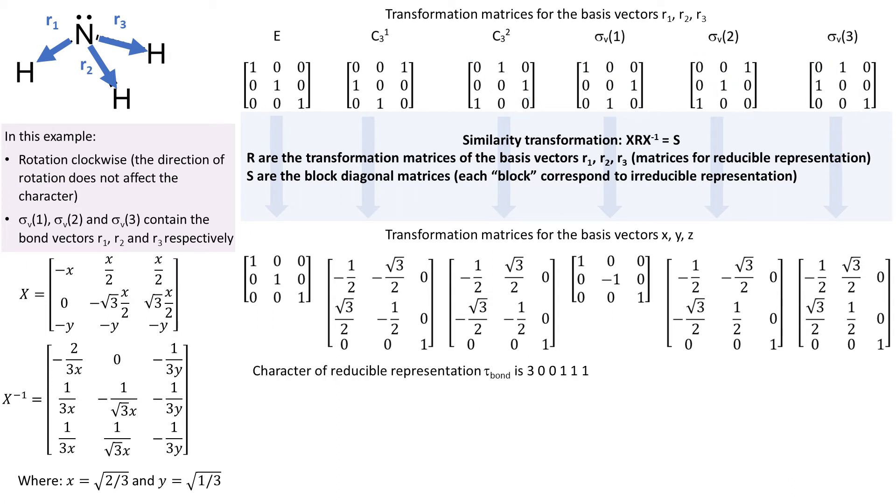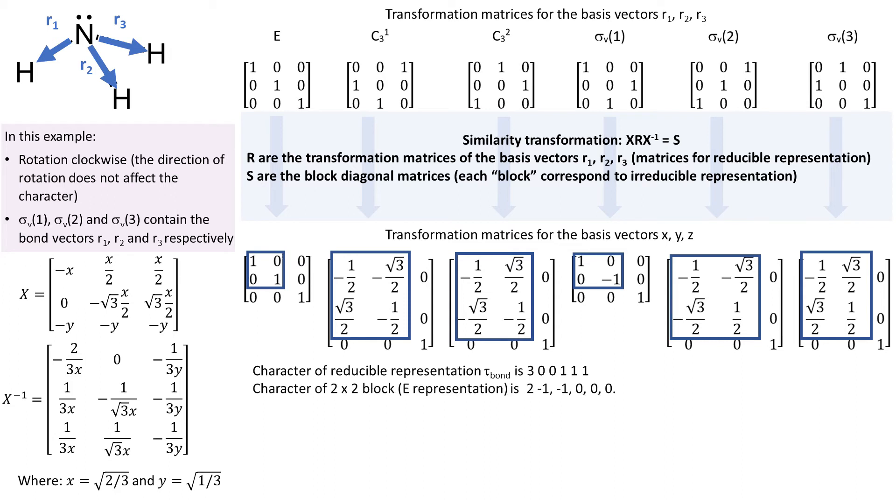We can see 2x2 blocks, and I'm sure you recognize that they are the matrices for the E representation for c3v, that we derived in one of the previous videos. The characters of these blocks are 2-1-1 0 0 0.